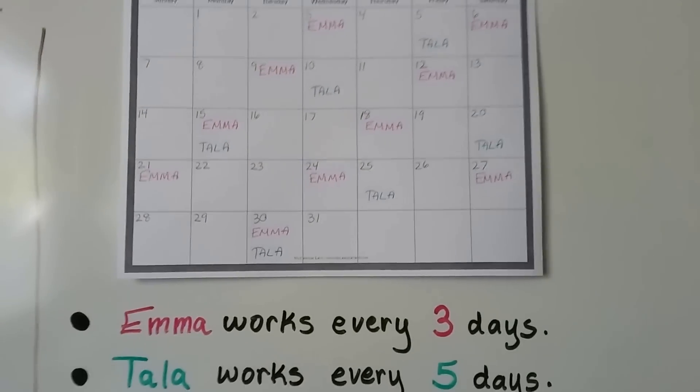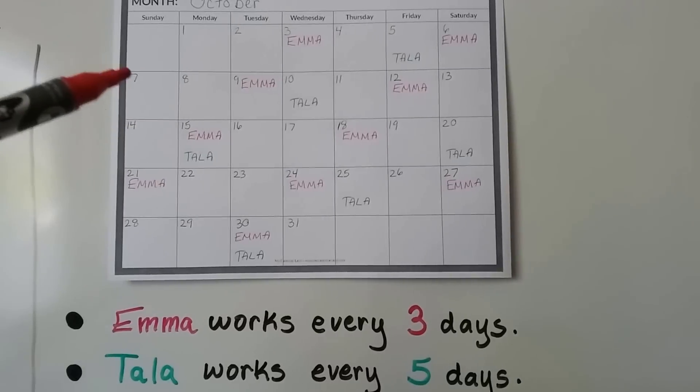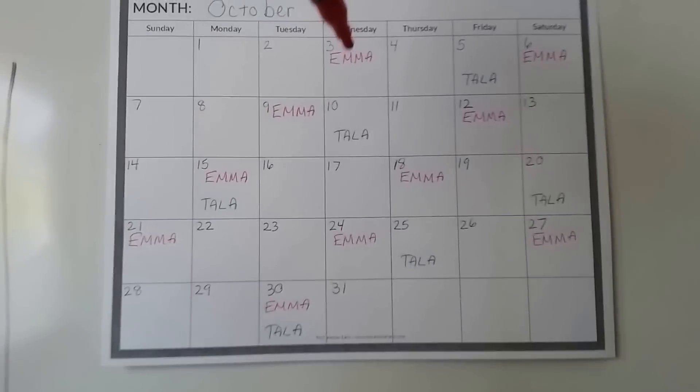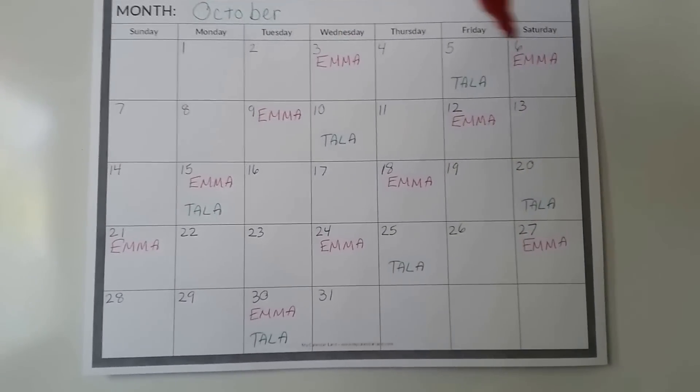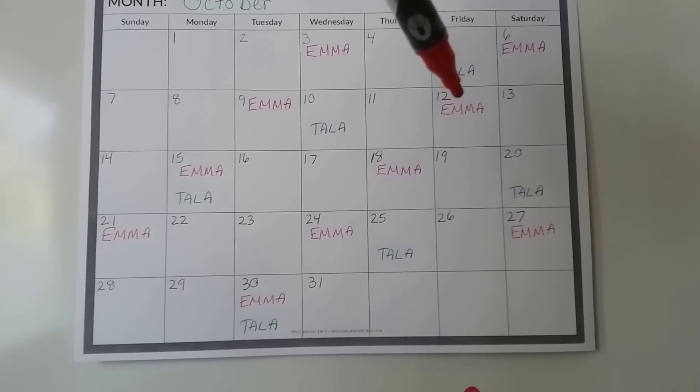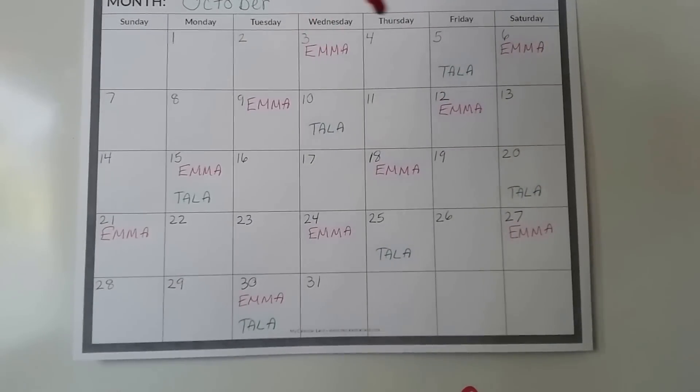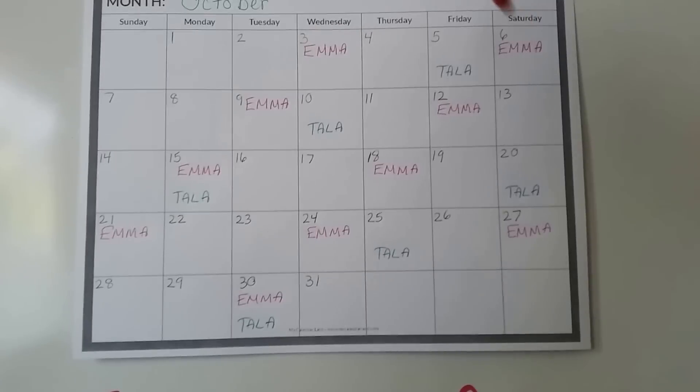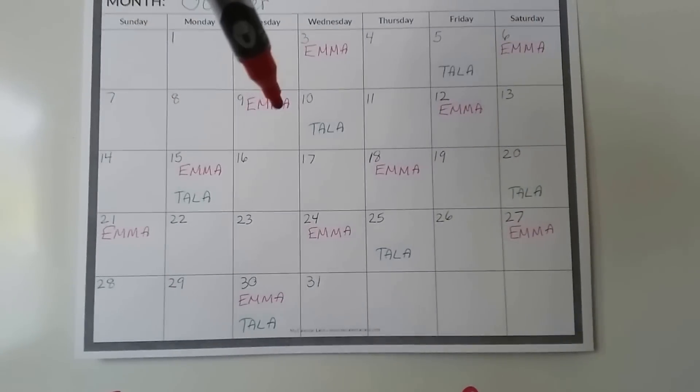Emma works every 3 days and Tala works every 5 days. So Emma works on the 3rd, the 6th, the 9th, the 12th. It's every 3 days. She works and then 1, 2, 3, she works again. 1, 2, 3, she works again.